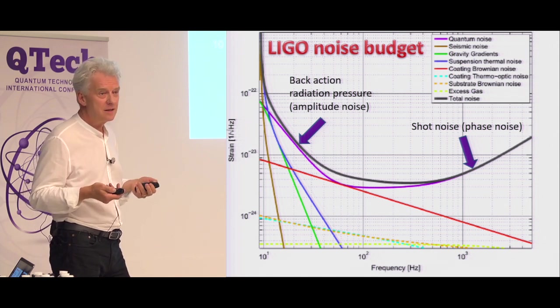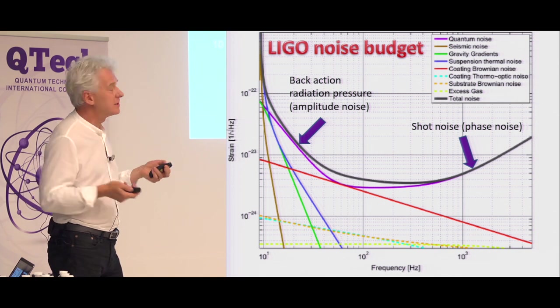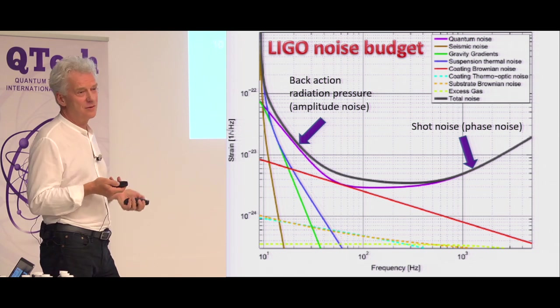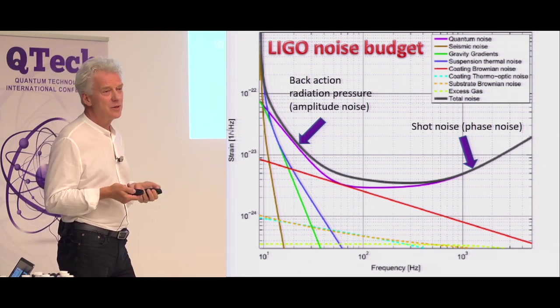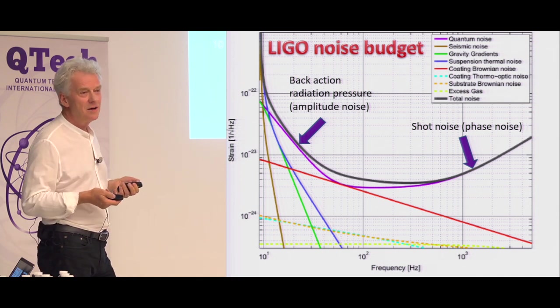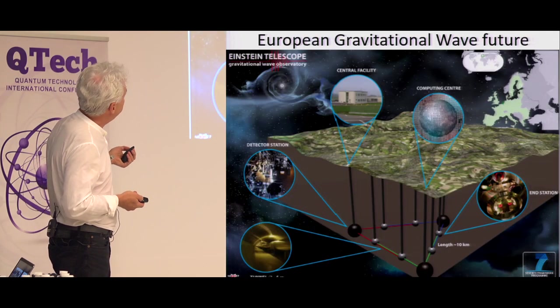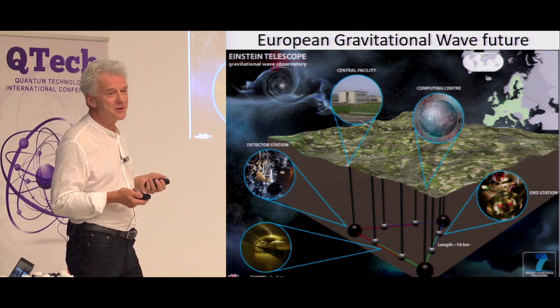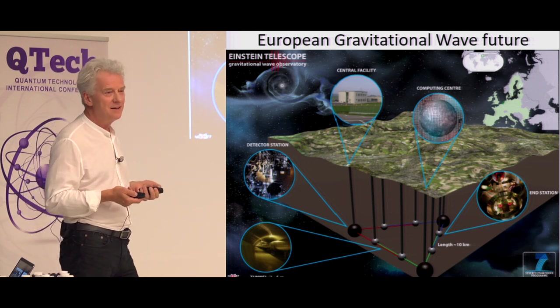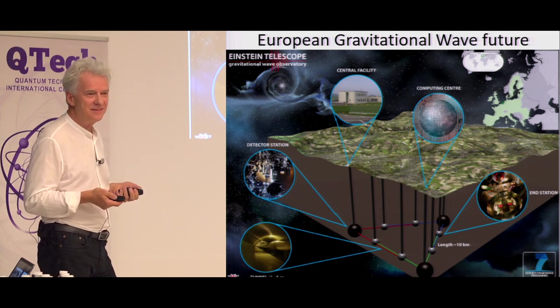But you want to measure everywhere, right? So you somehow need to reduce, at the same time, the radiation pressure noise and the phase noise. And this is what we think we can achieve because we can do the broadband cancellation of the quantum noise. So there is also a big European plan to build something underground, which will be even better than LIGO, somewhere kind of in the middle between, I think, Belgium, France, and something else.